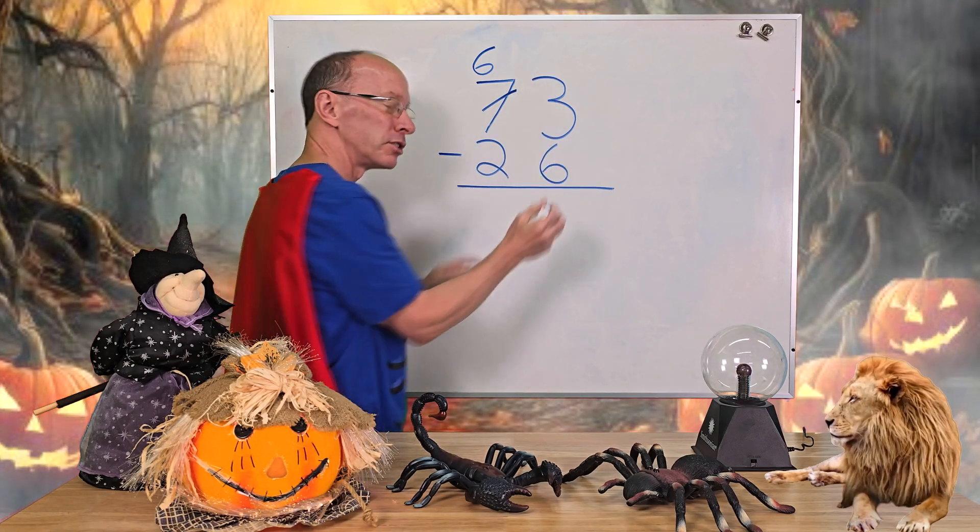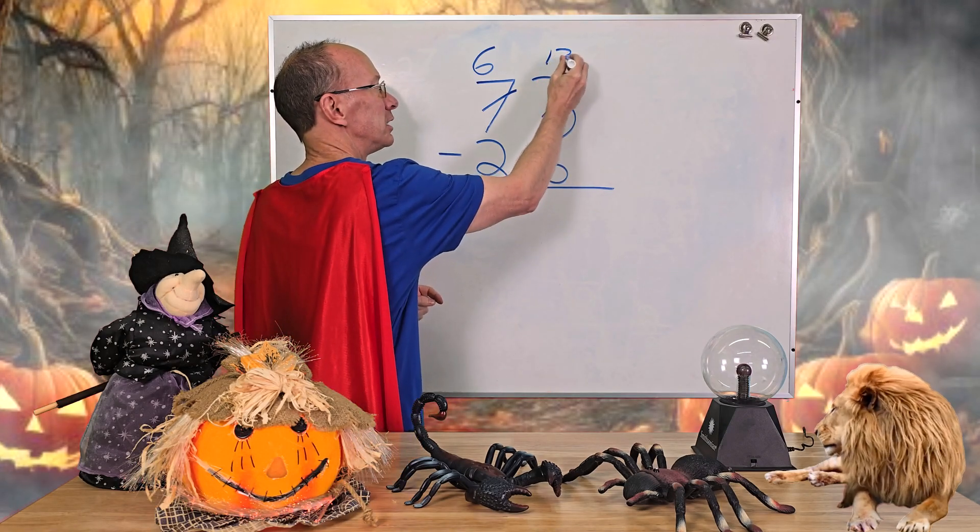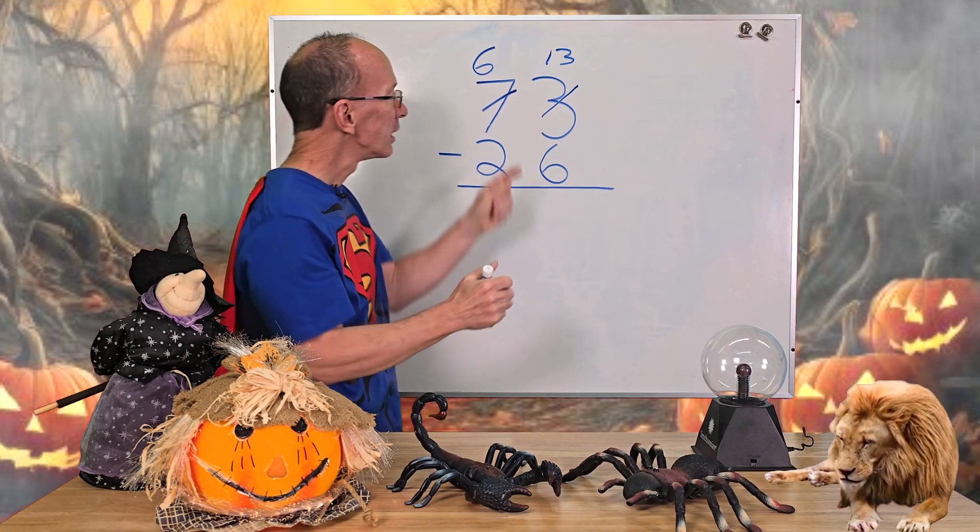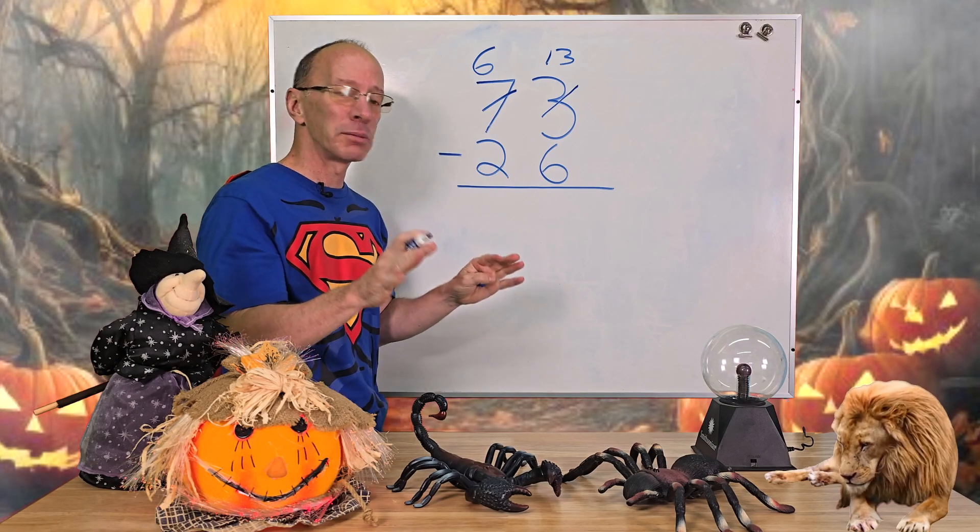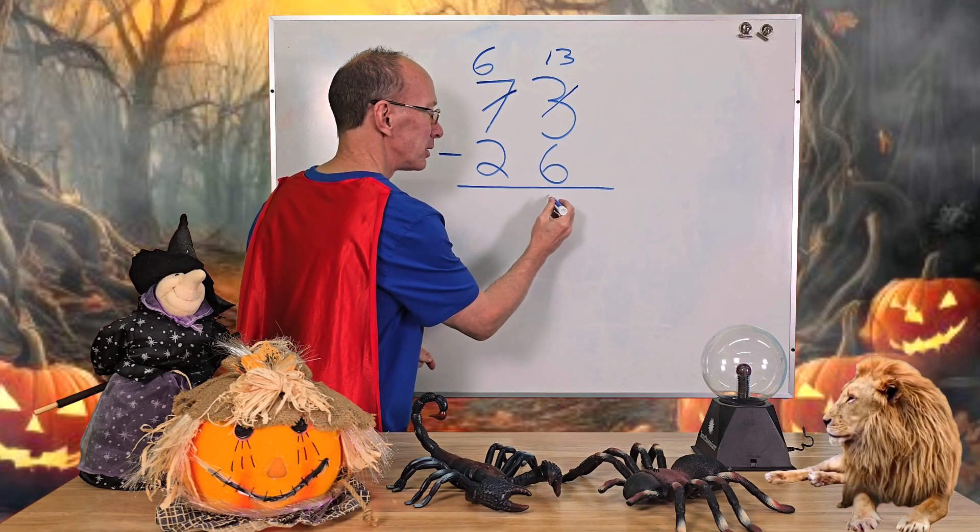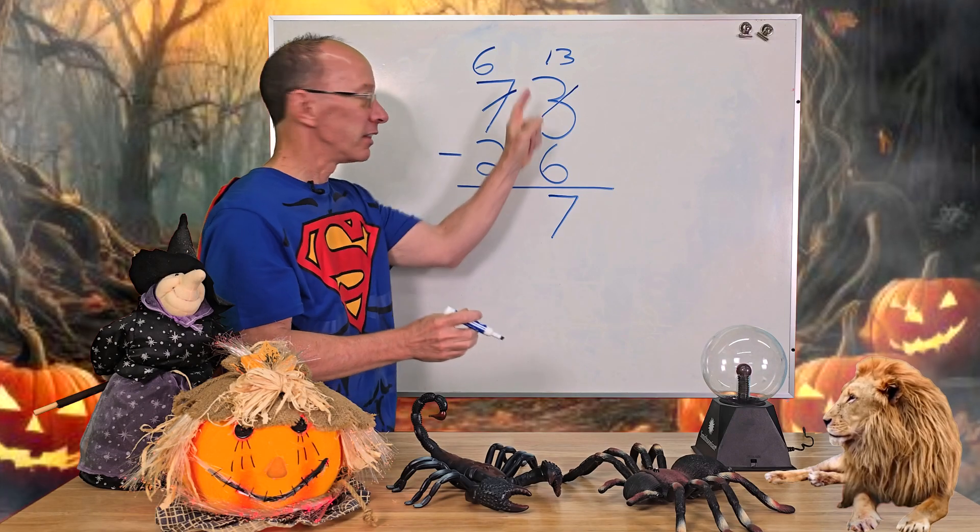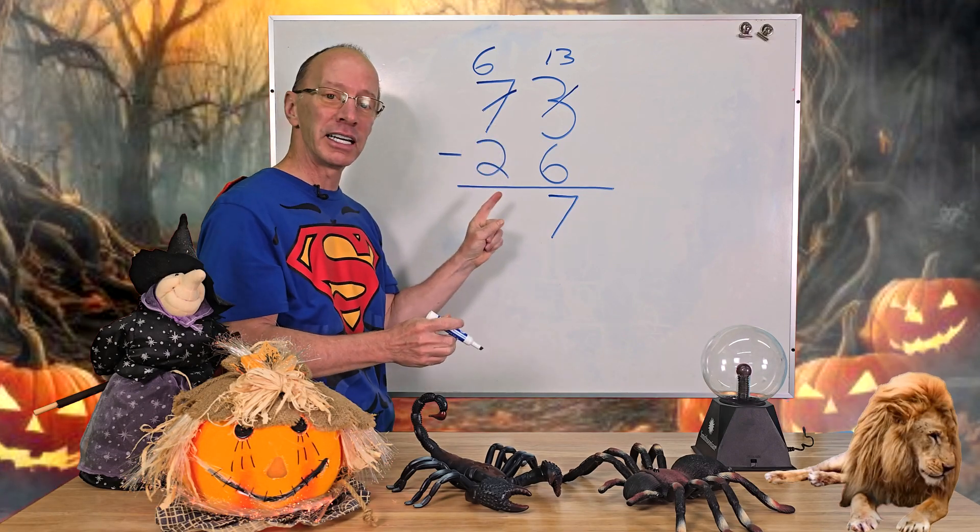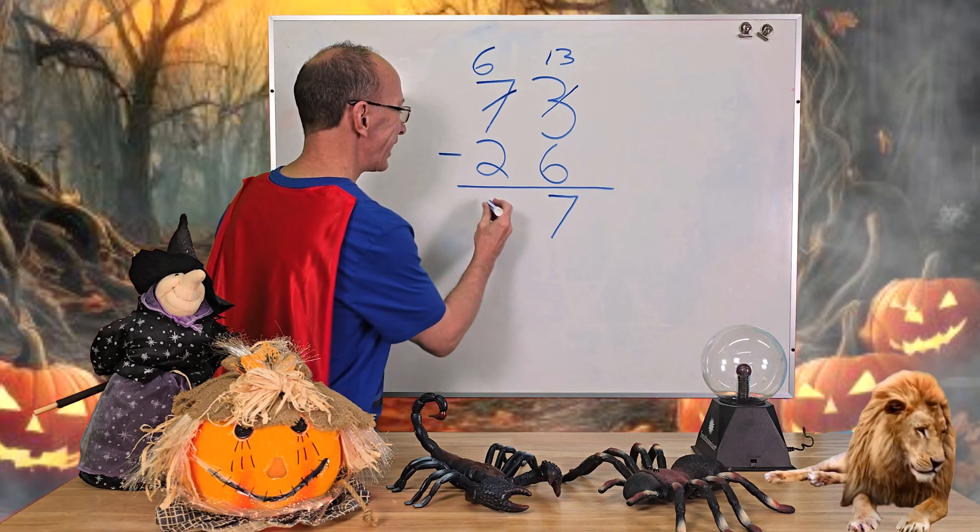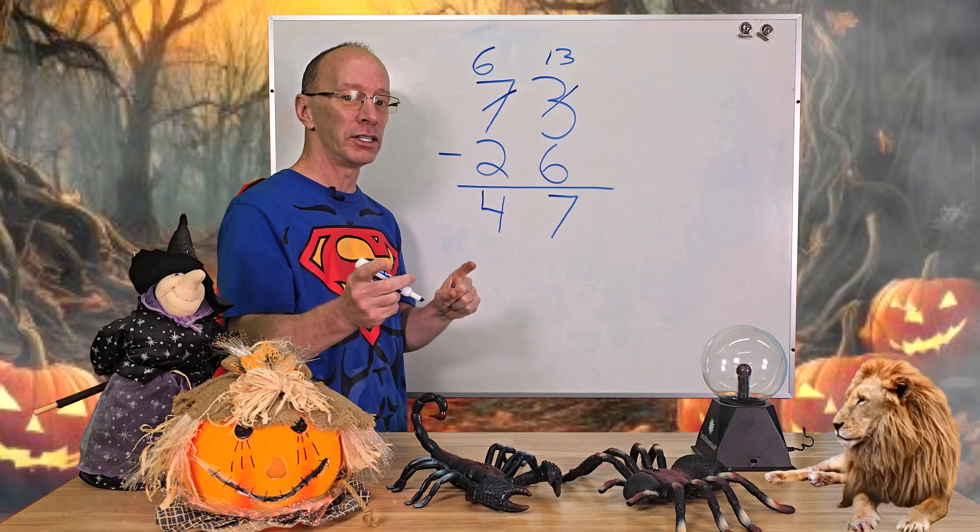So now there's two different ways you can do that. You can cross off the three and then put a 13 like that, or you can just put the one right next to the three. Both ways are okay. So now I'm able to subtract 13 minus six. What is it? That's right, it's seven. So I put seven right here and then I can go ahead and subtract my tens. These are the ones and these are the tens. So six minus two. What is it? Four. Yeah, I'm going to put four right here. Wasn't too bad, was it? Ready to do another one? Yeah, let's do it.